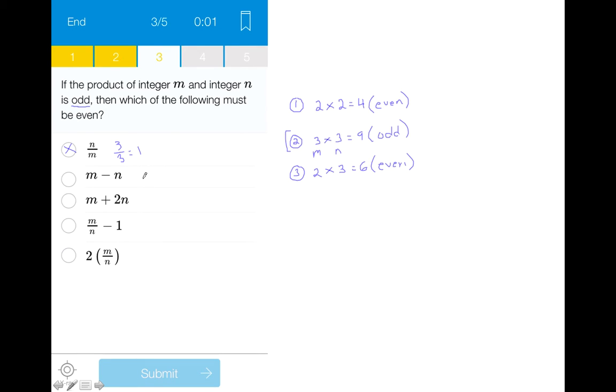Moving forward, answer choice B: if we had 3 as m minus 1, we would get 2, which is in fact even. But just to solidify the fact that this may be our correct answer, we look at another example. So if we did 5 for m minus 3 for n, that also equals 2, which is also an even integer, therefore most likely answer choice B is correct.